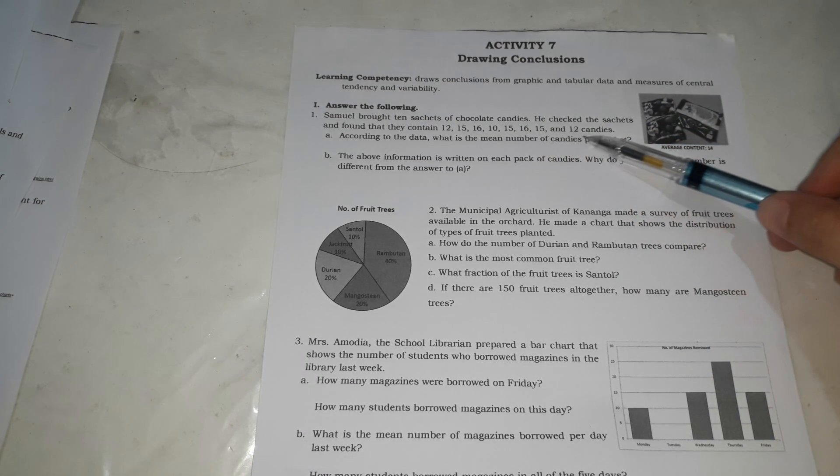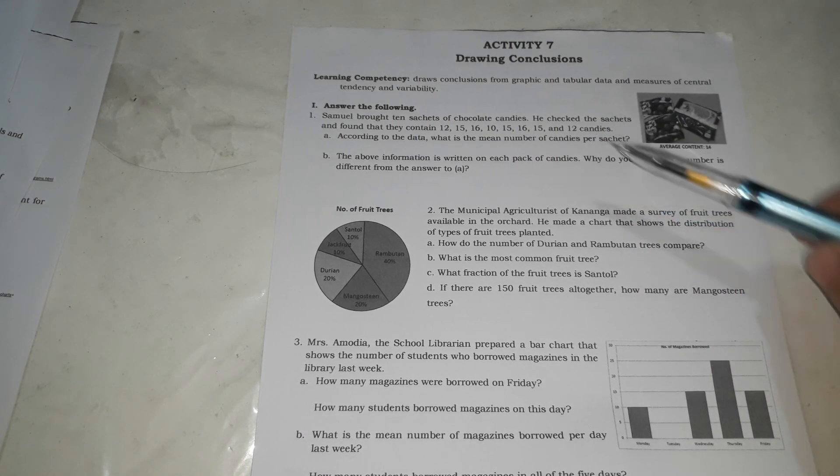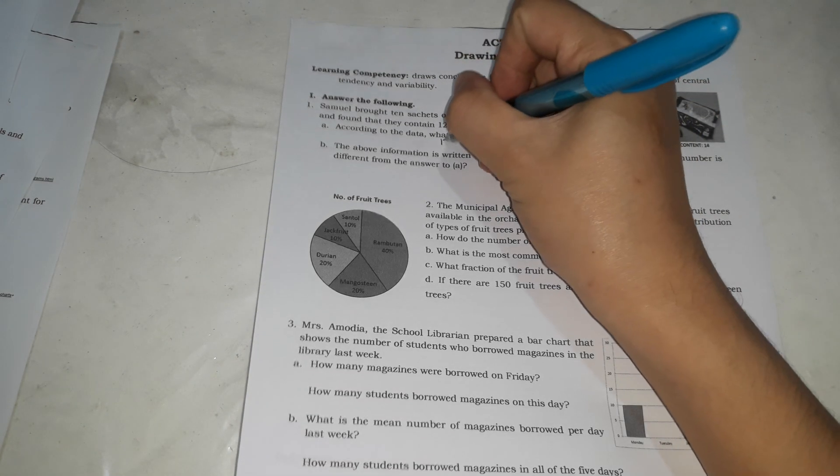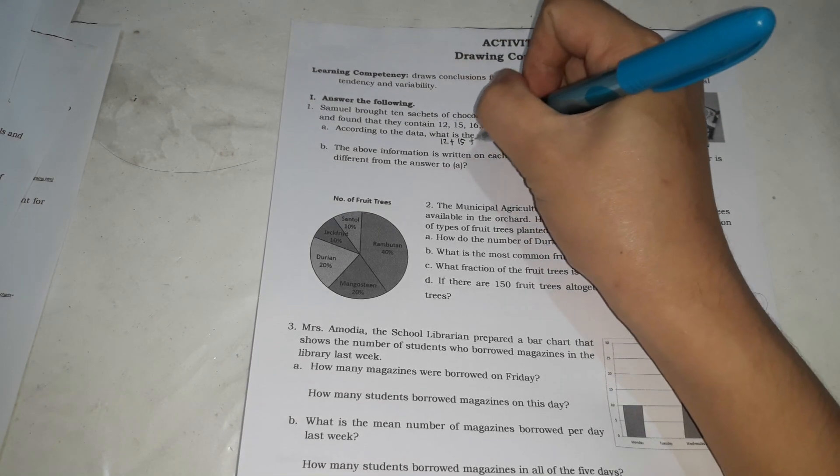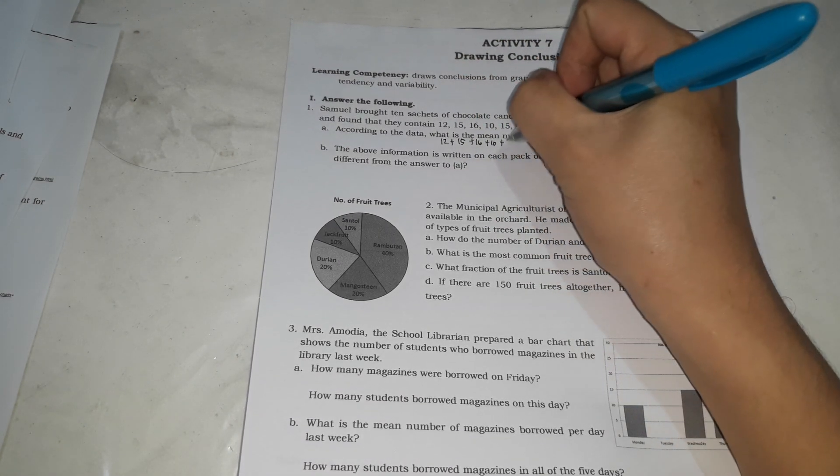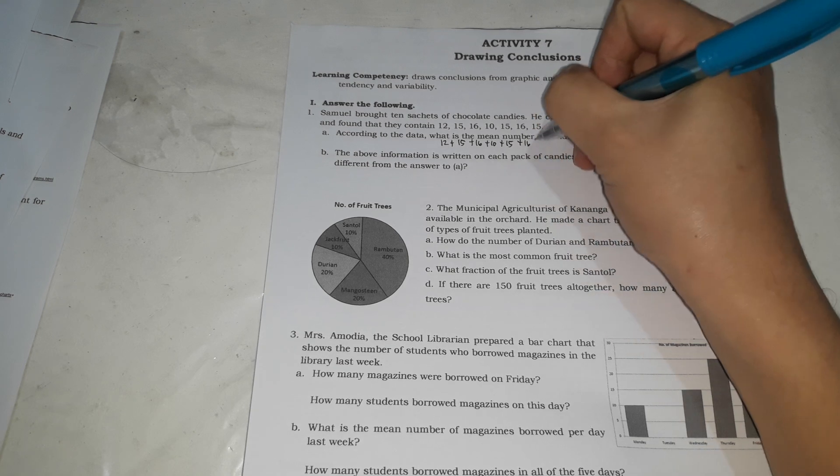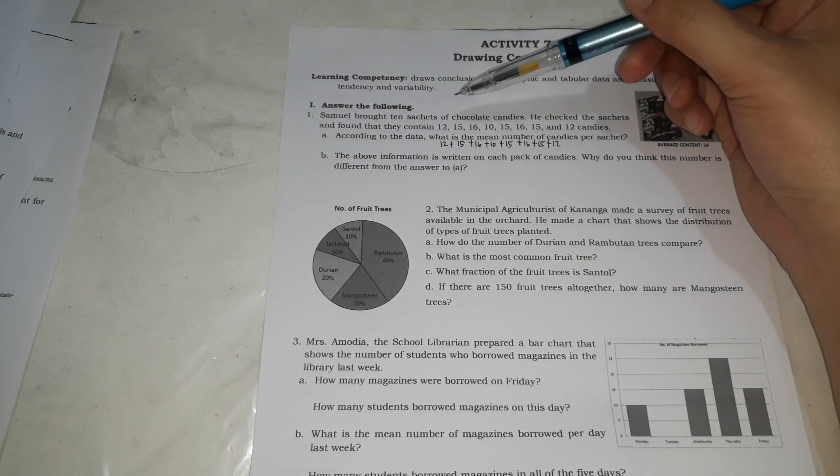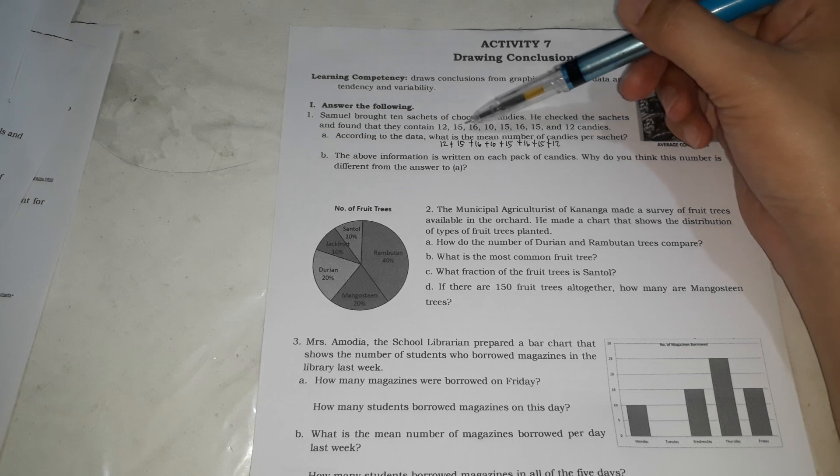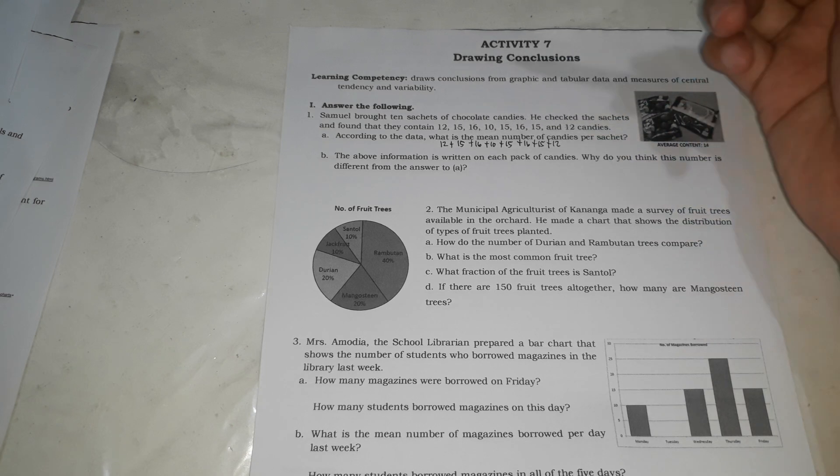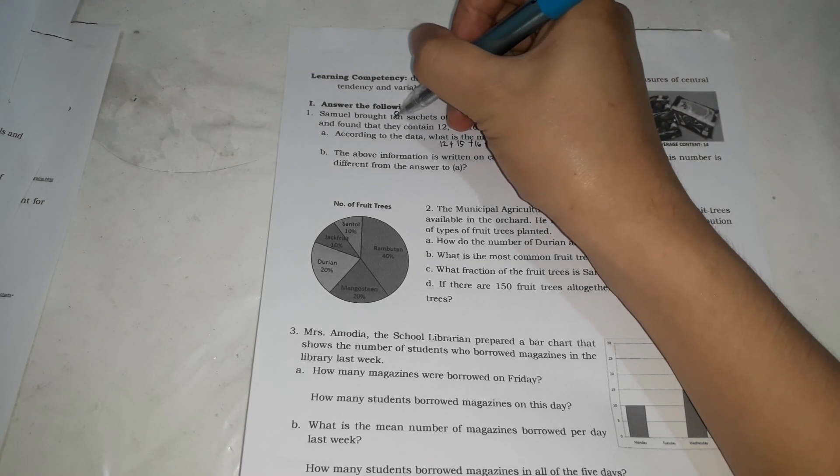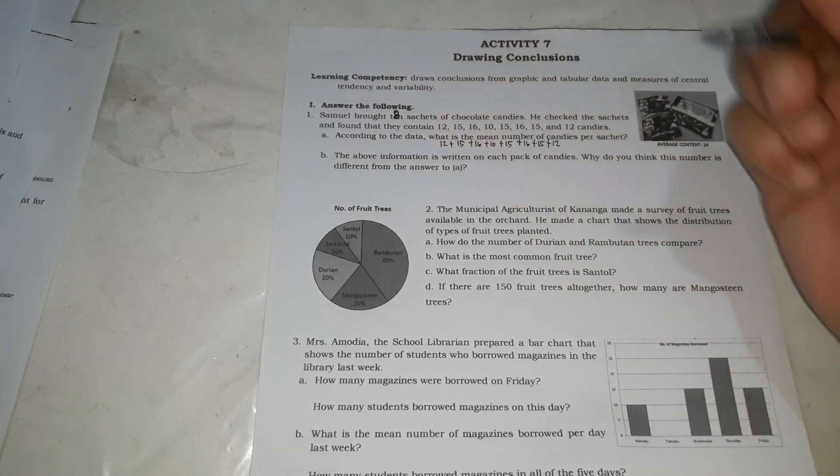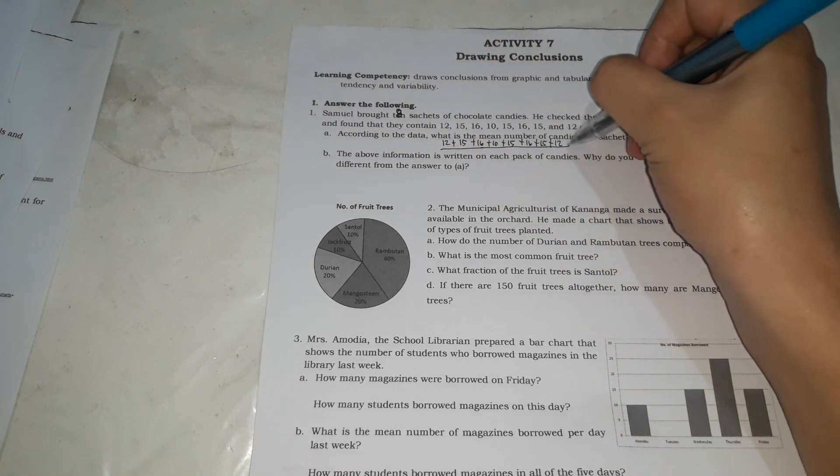According to the data, itong mga data na to, kukunin natin yung mean number of candies. What we're going to do is, we're going to add 12 plus 15 plus 16 plus 10 plus 15 plus 16 plus 15 plus 12. Let's check kung 10 ba ito. 1, 2, 3, 4, 5, 6, 7, 8. Sorry for that, instead of 10 sachets, it should be 8. So, divide by 8.